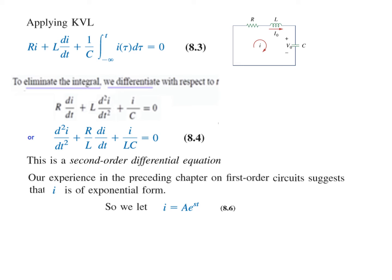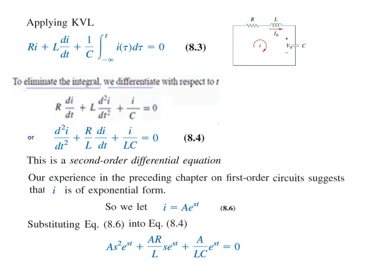As we have seen in Chapter 7, first-order circuits have current in exponential form. Based on that experience, we assume the current in this circuit is also of exponential form and write it as i = A·e^(st). Plugging this assumed current into the differential equation gives us the resulting terms.